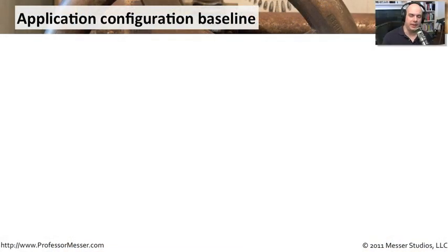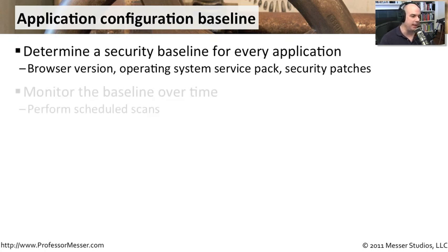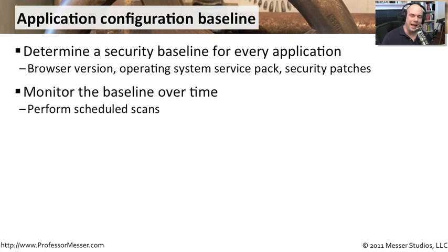There are many different aspects to securing an application, because an application has so many different components associated with it. An important thing to do is to identify all of those different components and understand how the application is used by each one. Look at the browser being used, the operating system it's running on — does it have any service packs or security patches? You need to understand exactly how the application is running, because if any one of those things changes, we need to be aware of it. And you have to do this for every single application you have.